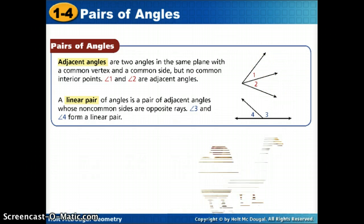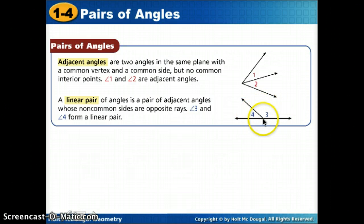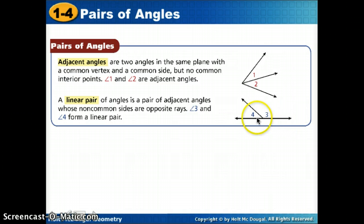The next type is a linear pair. The word 'linear' tells us they create a line, and they're a pair — so two angles that create a line. Technically, they are adjacent angles sharing a vertex and a side, and their non-common sides are opposite rays. Remember, opposite rays create a line. So we would say angles three and four are a linear pair.